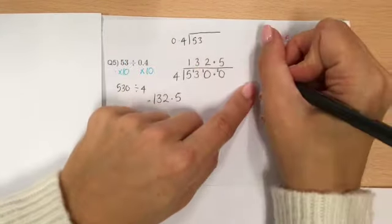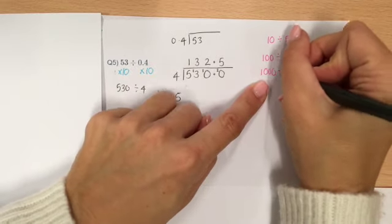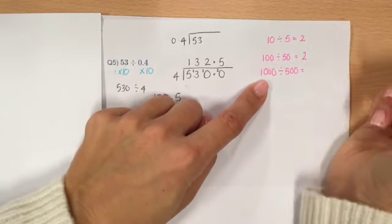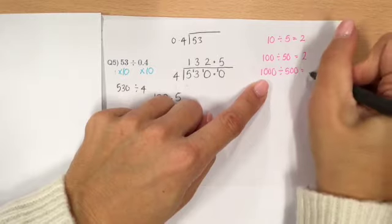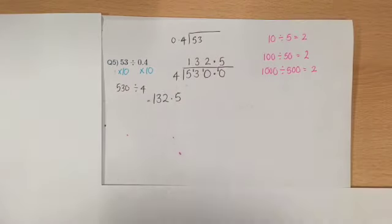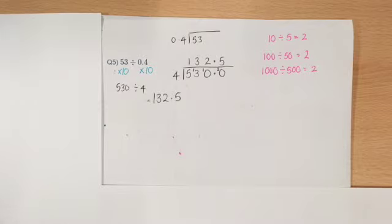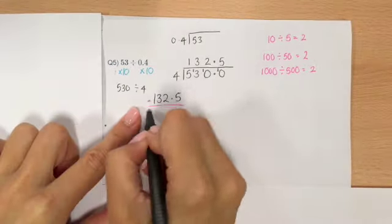Let's make it another 10 times bigger. So, I've got 1,000 divided by 500. How many 500s in 1,000? 2. So, it doesn't matter how many times 10 bigger you make it, you're still going to get the exact same answer. So, you don't need to do anything to this.